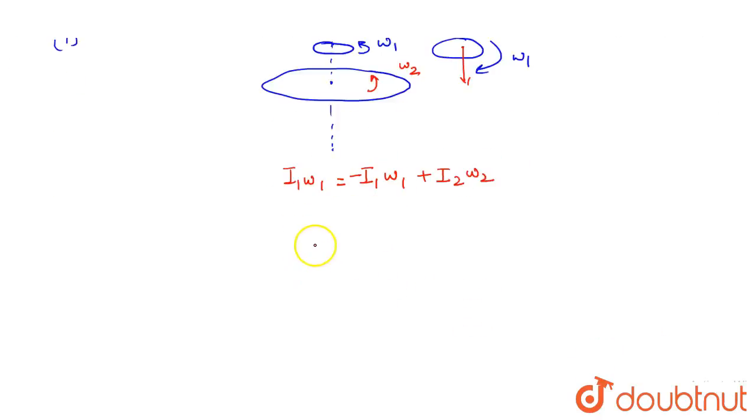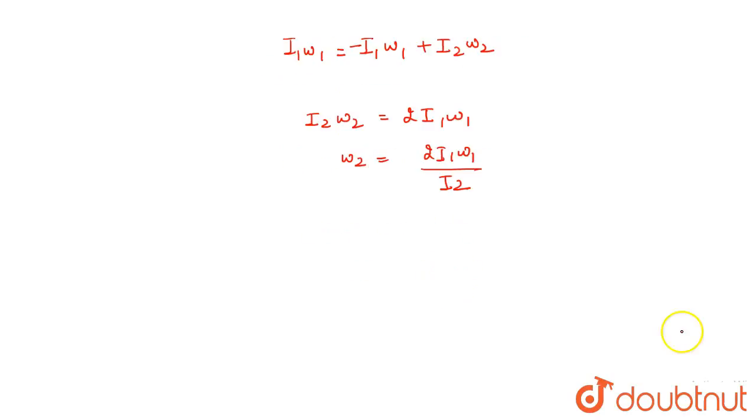So, i2 omega2 equals 2 times i1 omega1. And omega2 equals 2 times i1 omega1 divided by i2.